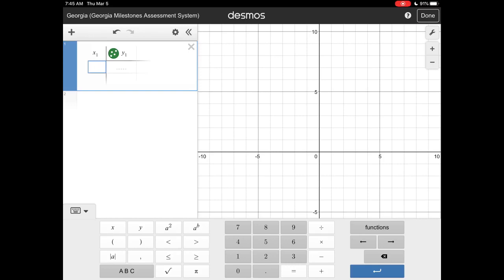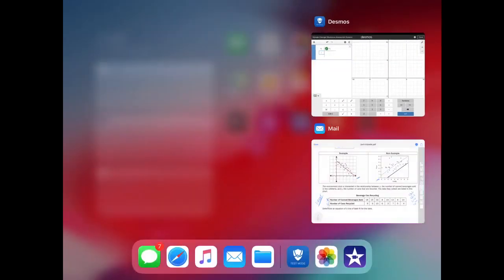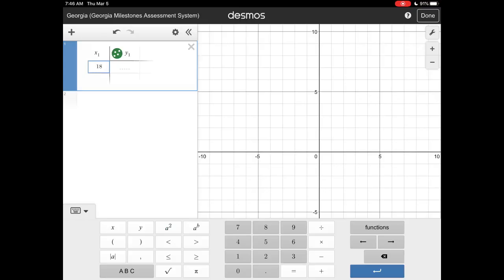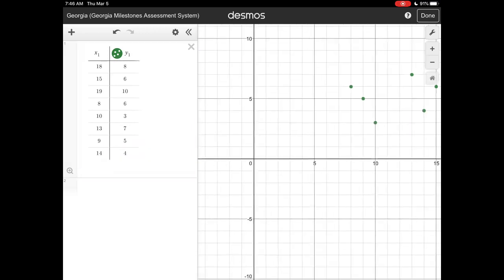Remember our X and our Y. So number of canned beverages sold, so this is our X values we're going to put in and these are our Y values we're going to put in. So X: 18, 15, 19, 8, 10, 13, 9, 14. And our Y values were 8, 6, 10, 6, 3, 7, 5, and 4.